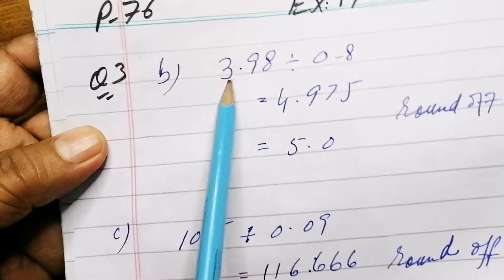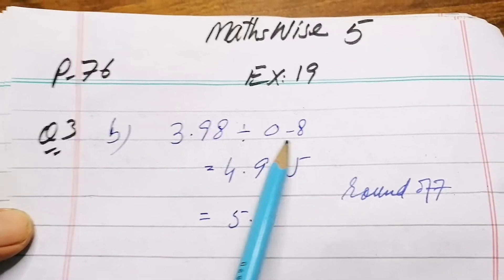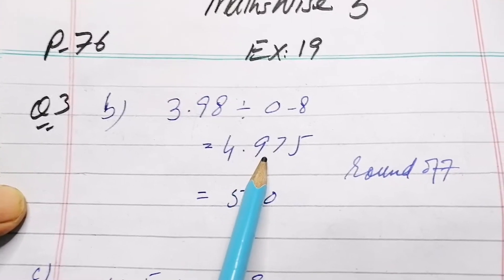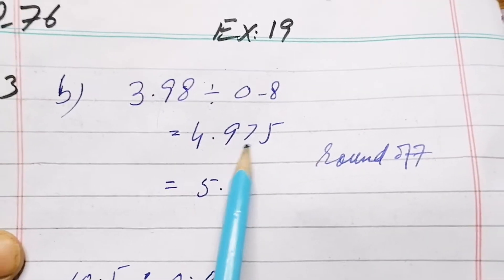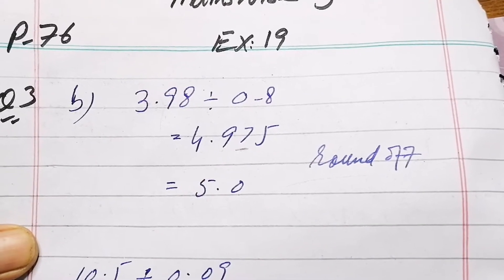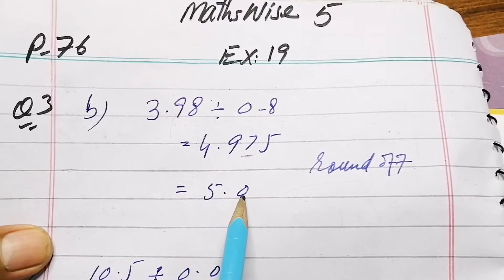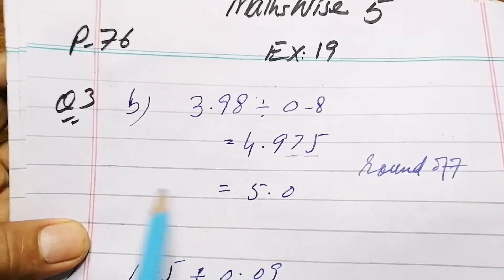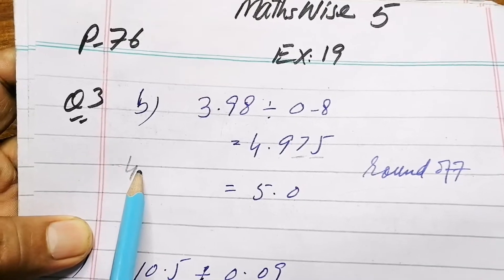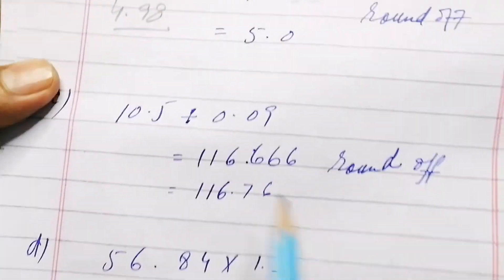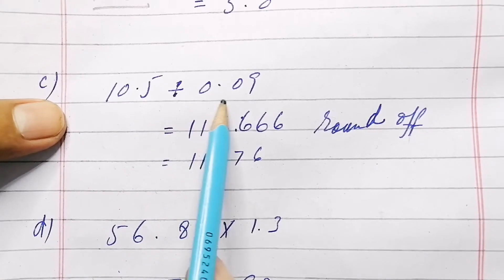For 3.98 divided by 0.8, dividing gives 4.975. Rounding off to two decimal places: looking at the hundredth place, 7 is there; the thousandth digit is 5, so 7 rounds up to 8, and by carrying over, the answer becomes 4.98.